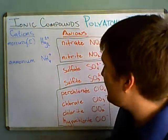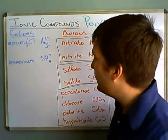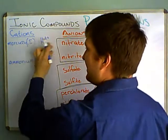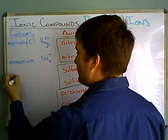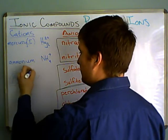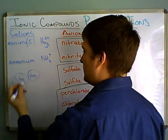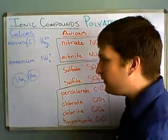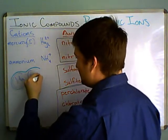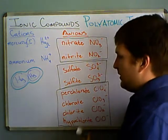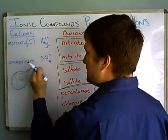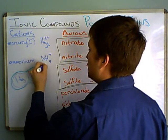These behave as one unit. The Hg₂²⁺ represents two atoms of mercury that are bound together — they're not going to be separated. And all together, this whole unit has a charge of plus 2.